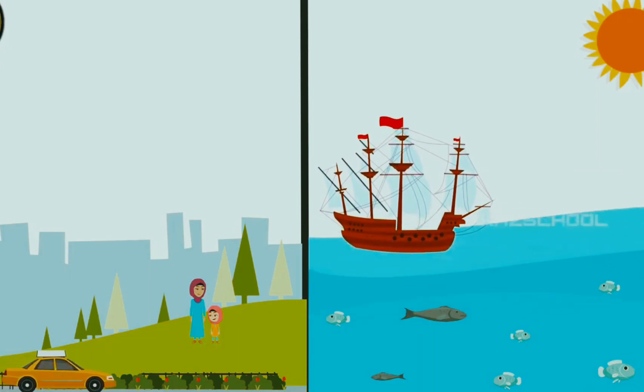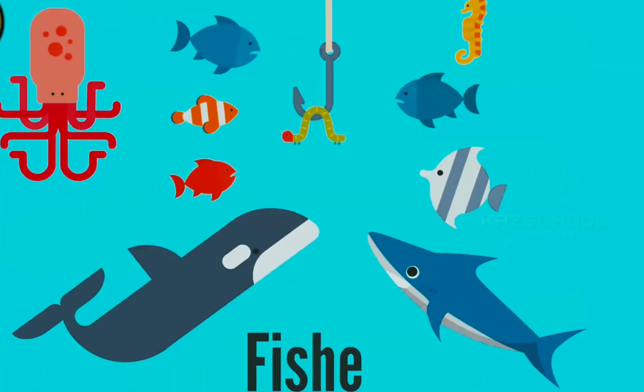Allah made large oceans and big seas, which cover the earth with water and form into deep lakes and long rivers. Allah made the sea monsters and all the fishes big and small.